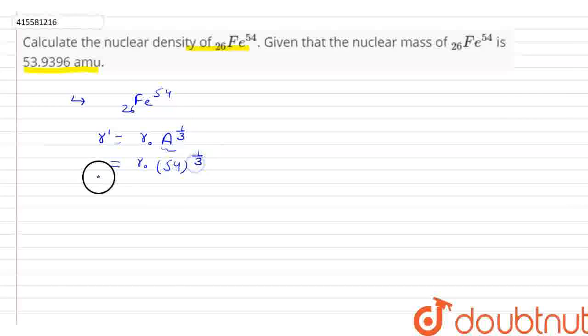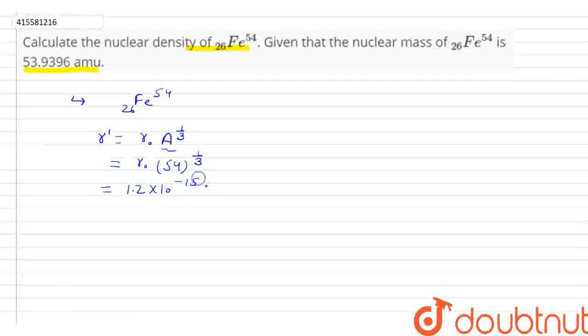So we calculate 54 to the power 1/3. The value of r₀ aapko pata hai is 1.2 × 10^(-15) meters. So the radius becomes 1.2 × 10^(-15) times 54^(1/3).